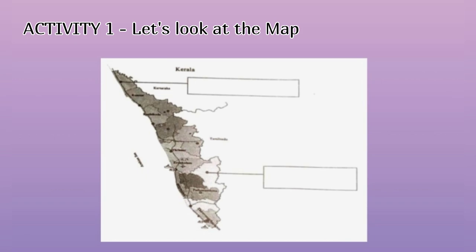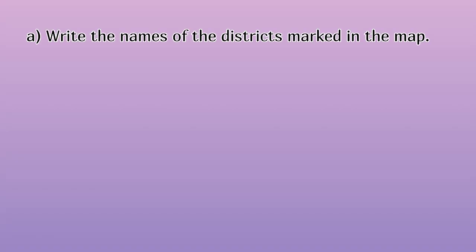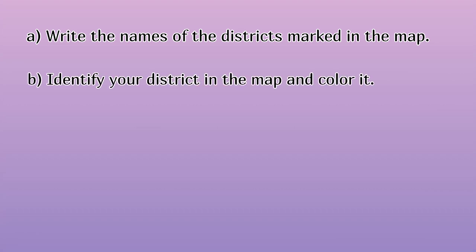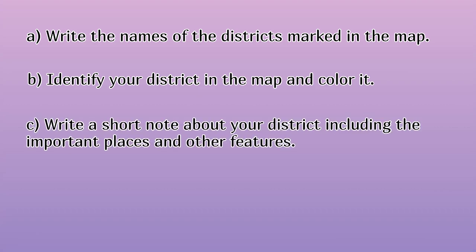Let's look at the map. A: Write the names of the districts marked in the map. B: Identify your district in the map and color it. C: Write a short note about your district, including the important places and other features.